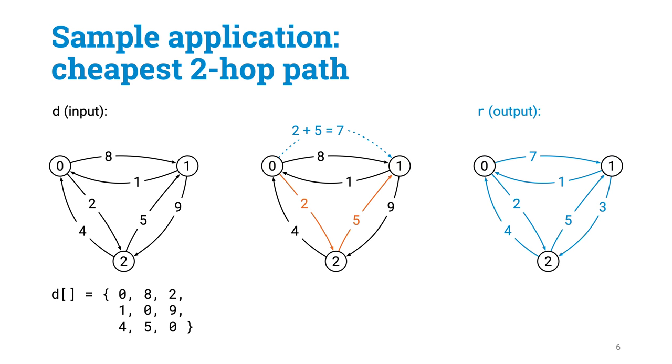We have given as input an n-by-n matrix D, that contains for all pairs of points what is the cost of getting from A to B directly.